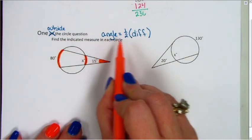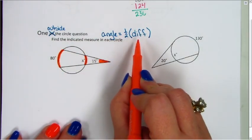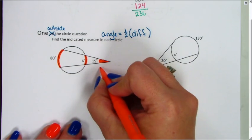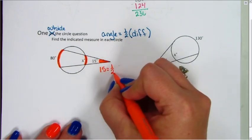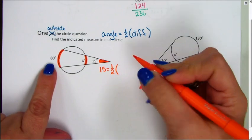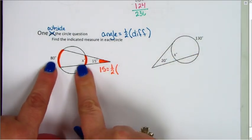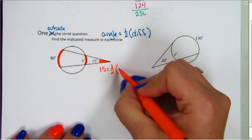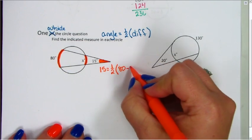The angle equals one half the difference. My angle is 15 degrees, equals one half the difference. We're always going to do the outside arc minus the inside arc, so 80 minus x.